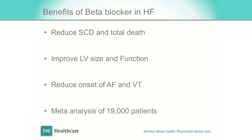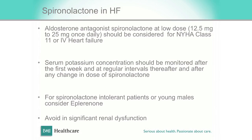Beta blockers reduce sudden cardiac death, improve left ventricular cavity size and ejection fraction, and reduce the onset of atrial fibrillation and VT — there is strong evidence, more than rocket science. Spironolactone is very useful. As long as you stick to the contraindications — advanced renal disease, you should not use it — and you must closely monitor potassium. In young patients, or if the patient develops anti-androgen side effects, switch to eplerenone.